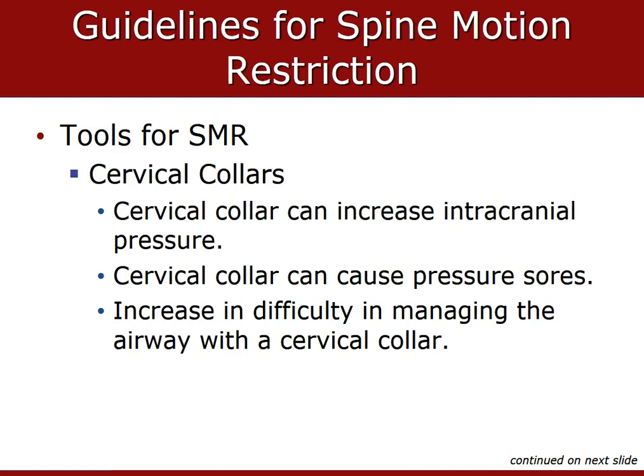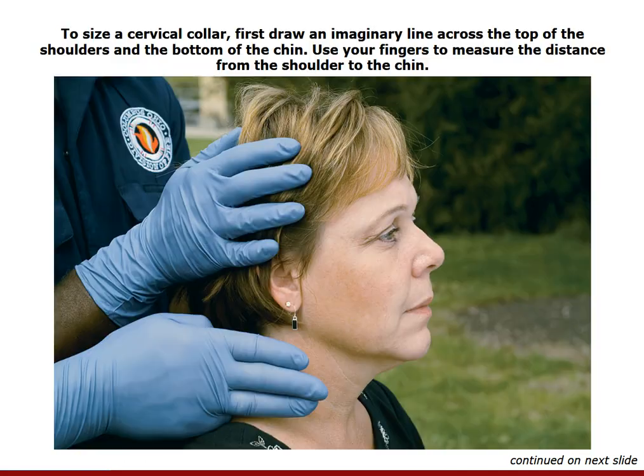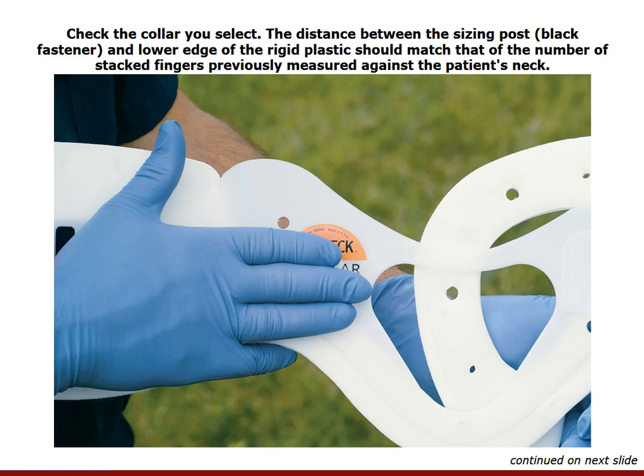During the course of your lab, we will teach you how to size and place rigid cervical collars, how they can cause pressure sores, and the increased difficulty in managing an airway with a cervical collar in place. To size a cervical collar, you use your fingers aligned from the bottom of the jawline to the top of the shoulder. Sizing the rigid collar for the patient is based on the design of the device. We have two or three different kinds here in lab that we will show you.